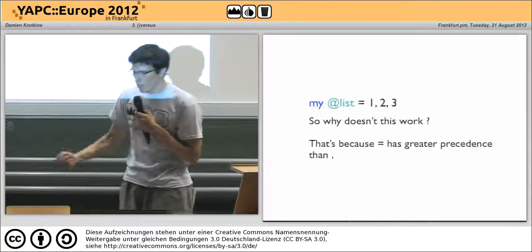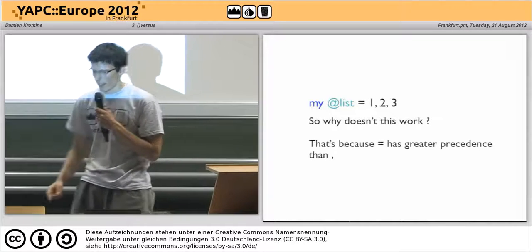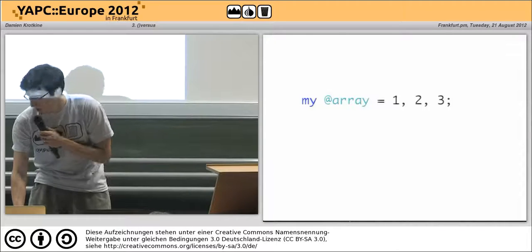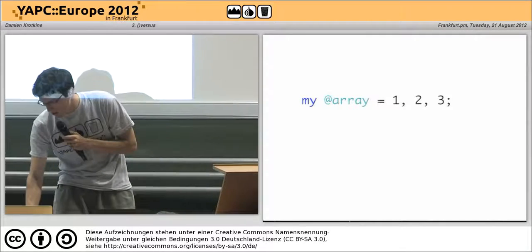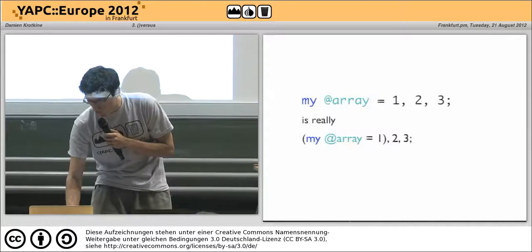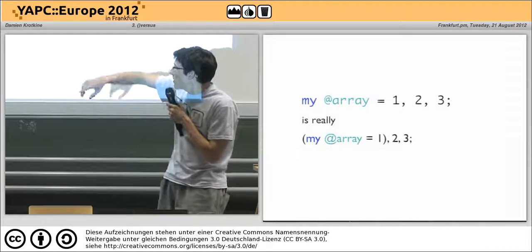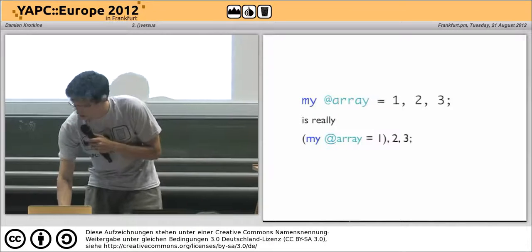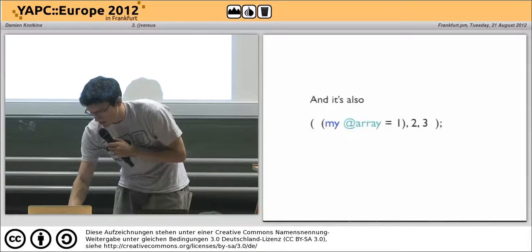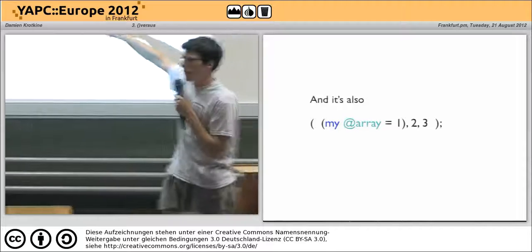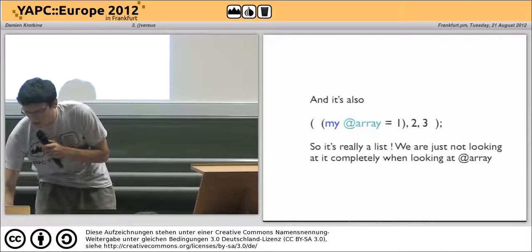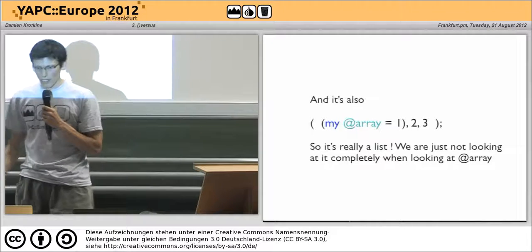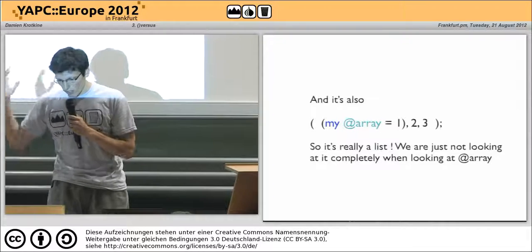That's because equals has a greater precedence than comma. So my @array equals 1, 2, 3 is really parsed as: my @array equals 1, then (2, 3). And it's also this stuff. You can add parens around this, so it's really a list — we are just not looking at it completely when looking at our array.